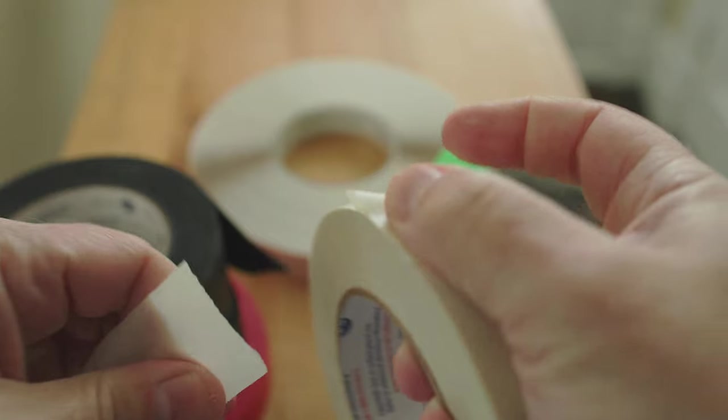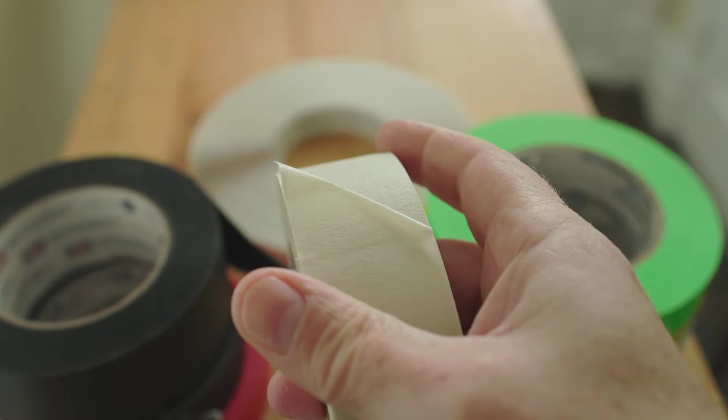Pull it out. Wrap your finger under. Create that 90 degree fold. Push down with your thumb. Rip. There it goes.